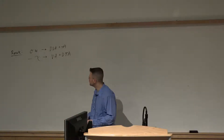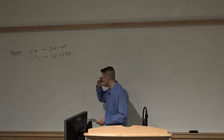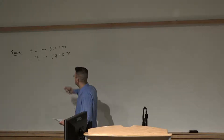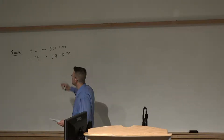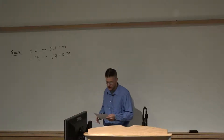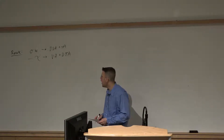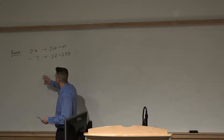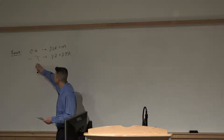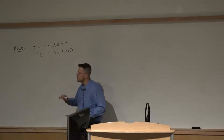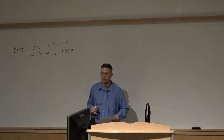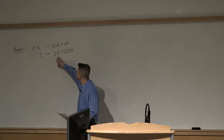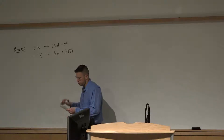We're going to proceed with the physical implications and conceptual model associated with the QG chi equation, talking about height tendencies and geopotential tendency, where we have negative chi changes in geopotential height being driven by vorticity advection and differential thermal advection.